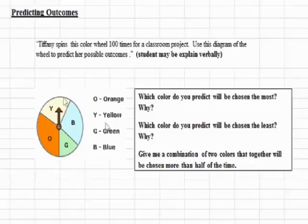Let's read the word problem. Tiffany spins this color wheel 100 times for a classroom project. Use this diagram of the wheel to predict her possible outcomes. In this chart, you have different portions representing different colors.